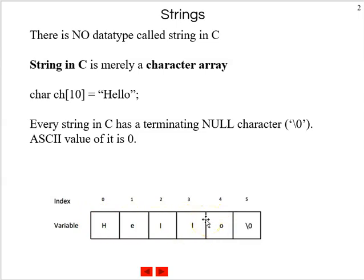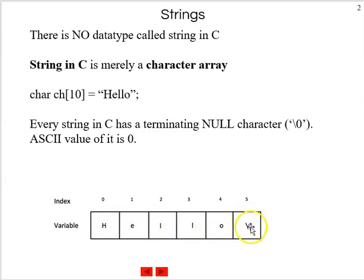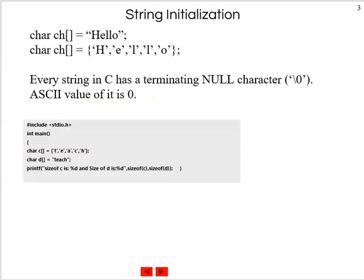Every string has a terminating character, which is a null character. The ASCII value of this character is 0. That is the last character which indicates to the C program that this is where the string ends. So H-E-L-L-O, and then there is a backslash 0. To store this hello, it requires 6 characters.